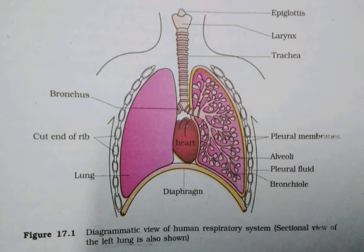Inspiration and expiration are carried out by creating pressure gradients between the atmosphere and the alveoli with the help of specialized muscles — intercostal muscles and the diaphragm. The volume of air involved in breathing can be estimated with the help of a spirometer and is of clinical significance.